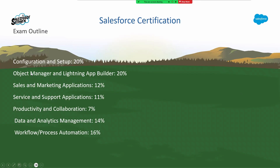Now we know the exam outline: Configuration and Setup is 20% — a very big portion. Object Manager and Lightning App Builder is 20%. Sales and Marketing Applications is 12%, Service and Support 11%, Productivity and Collaboration 7%, Data and Analytics Management 14%, and Workflow/Process Automation 16%. For the next three weeks, we're going to be looking at Configuration and Setup.